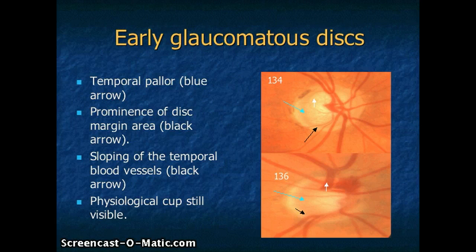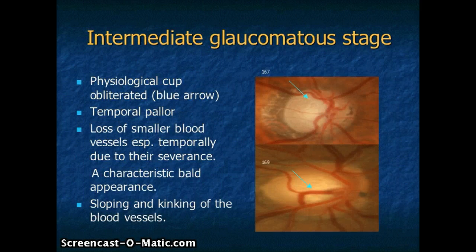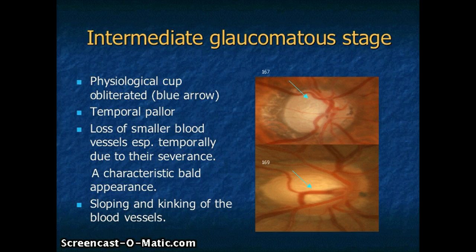Here are a few more photographs of early glaucomatous discs. You would note temporal pallor, increased visibility of the underlying disc margin area, and sloping of the temporal blood vessels. Despite these findings the physiological cup is still intact in early stages. These are also early glaucomatous discs — you may appreciate that the same pattern is occurring in all these early stage glaucomatous discs. These are pictures of the intermediate stage. The physiological cup is broken and becomes indistinguishable and confluent. There is increased excavation and pallor due to loss of nerve fibers and vasculature. There is disappearance of smaller branch vessels due to their severance, especially noted in the temporal part, giving a characteristic bald appearance. There is nasal shifting of central vessels due to loss of anchorage from severance of temporal fibers, and increased sloping and kinking of the blood vessels.